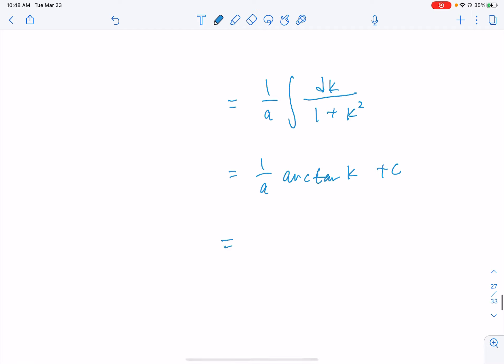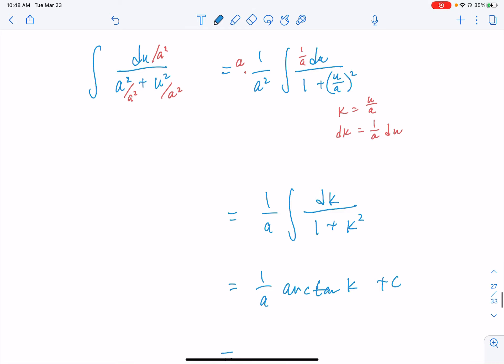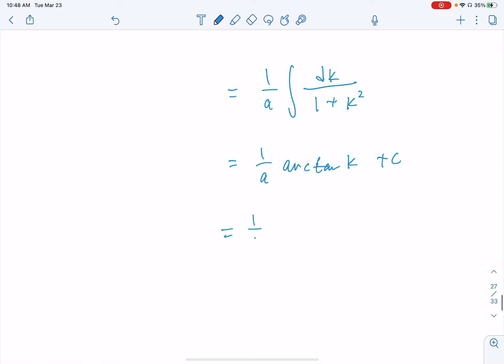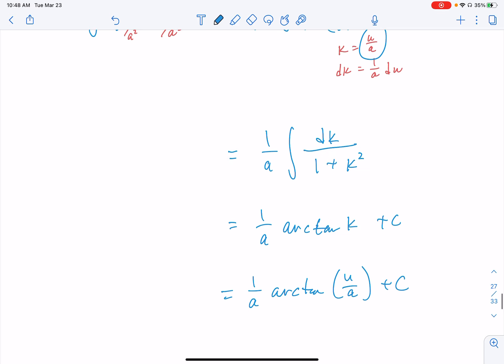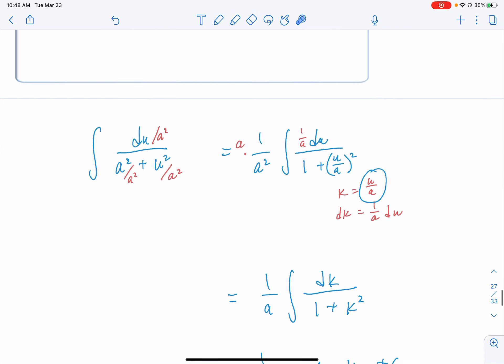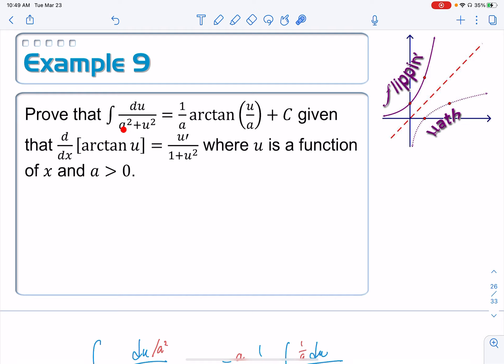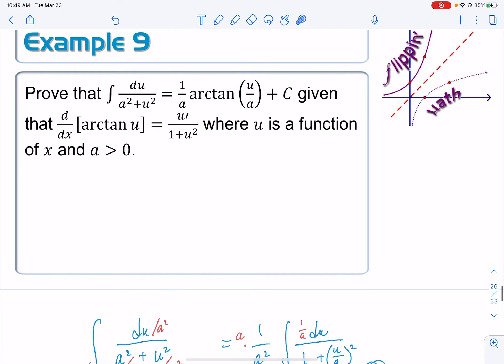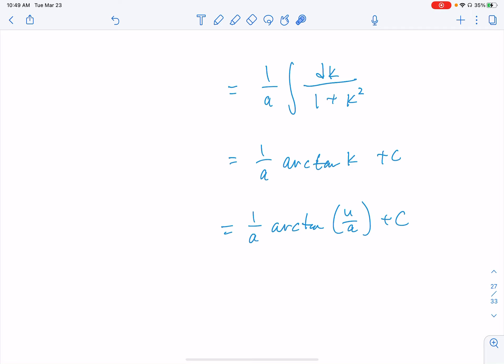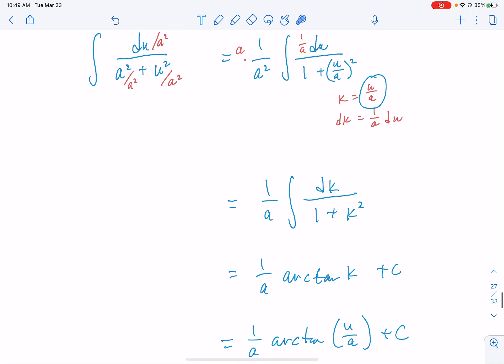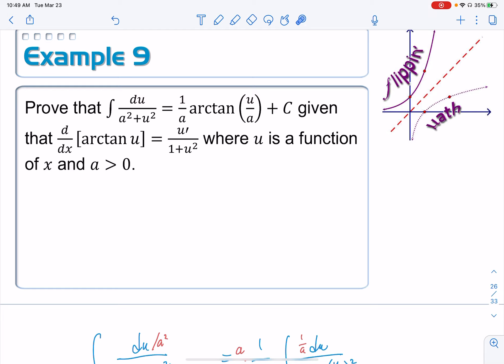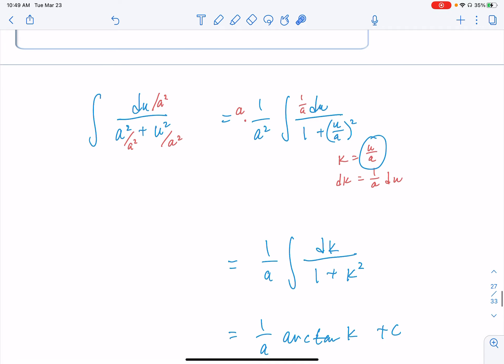Take out k and replace it with u/a. So our final answer is (1/a)arctan(u/a) + c. Basically what's happening is: whatever the coefficient is, you take the square root of it, then take the reciprocal—that's your coefficient out front, times arctangent of the quotient of your function divided by the a value that we got by taking the square root.